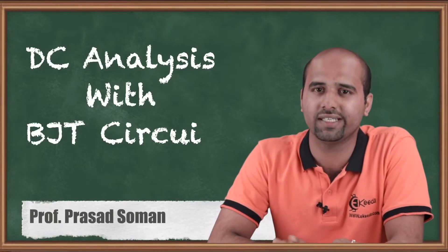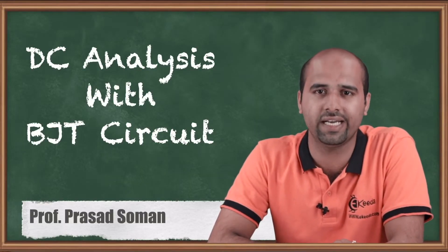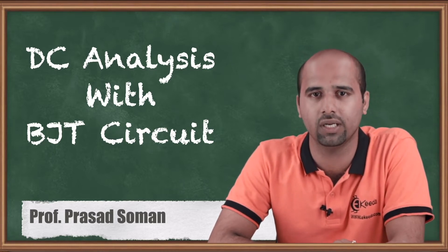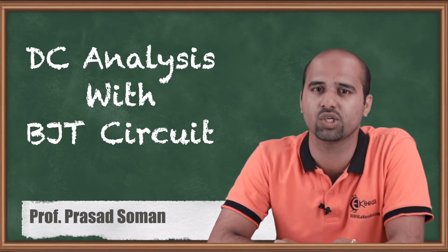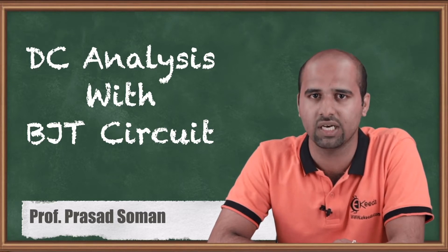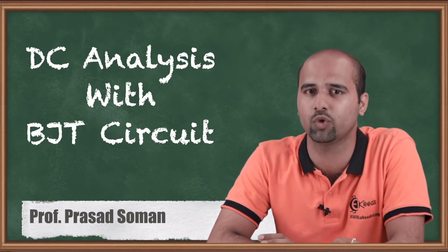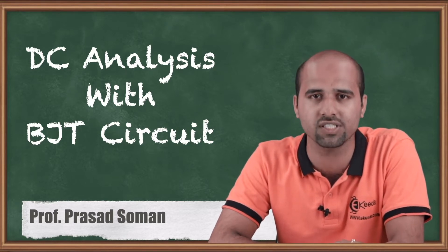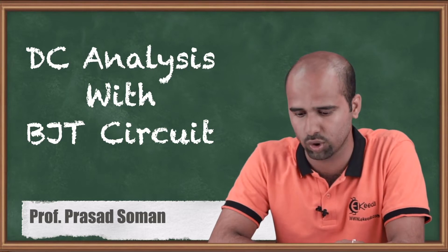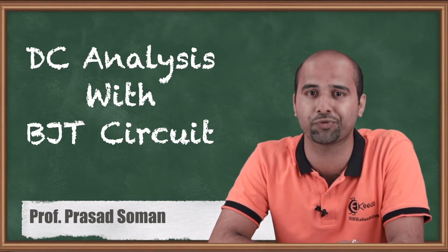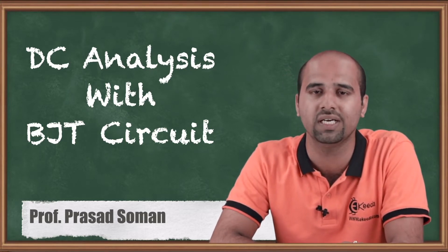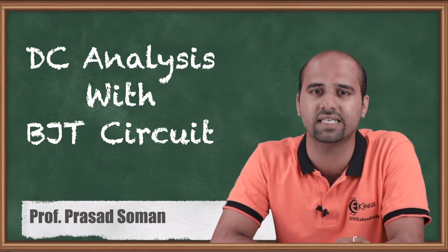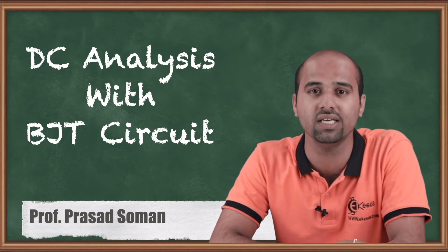After learning the biasing techniques in depth, both mathematically and conceptually, here we will be learning the DC analysis of BJT circuits. With BJT circuits we have to deal with all types of biasing techniques, but the first step is DC analysis. In the amplifier operation, we need to understand the effect of DC voltages in the circuit.